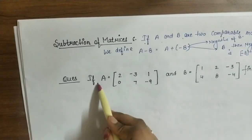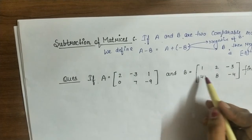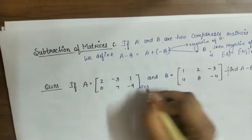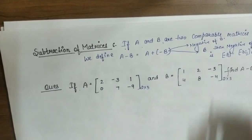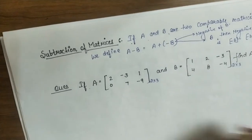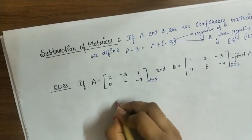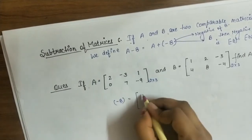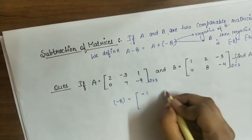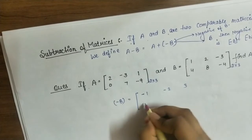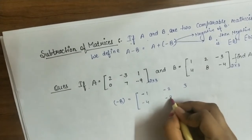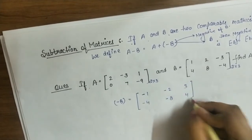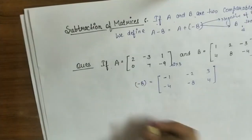Let A and B be matrices of order 2×3. Find A-B. First, find -B, the negative of B, by replacing all elements with their additive inverses: [-1, -2, 3, -4, -8, 4] becomes [1, 2, -3, 4, 8, -4].